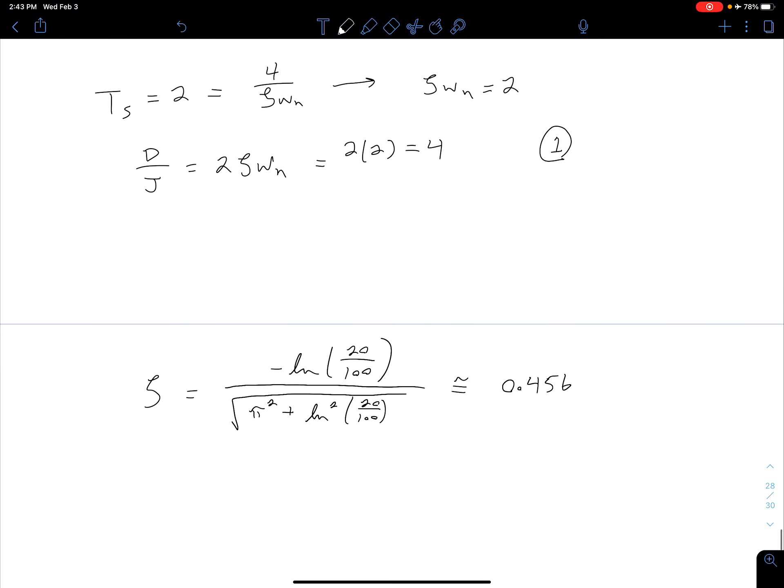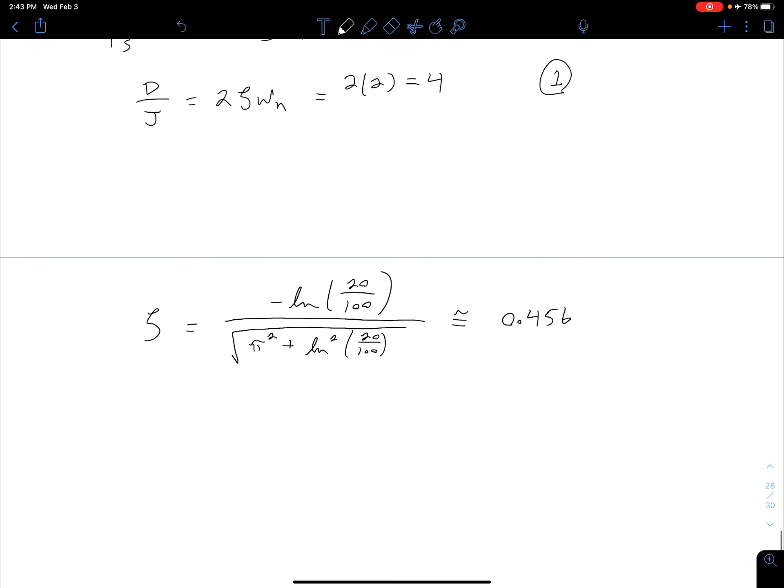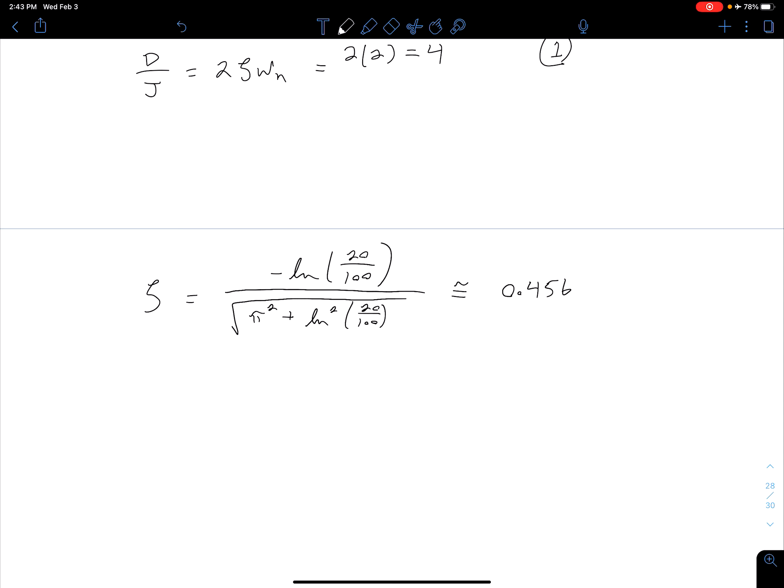Let's keep in mind up here we found that zeta times omega_n is 2. Now that we know zeta we can find omega_n. So we can say zeta*omega_n equals 2 and knowing that our zeta is 0.456 is going to give us an omega_n of approximately 4.386 radians per second.